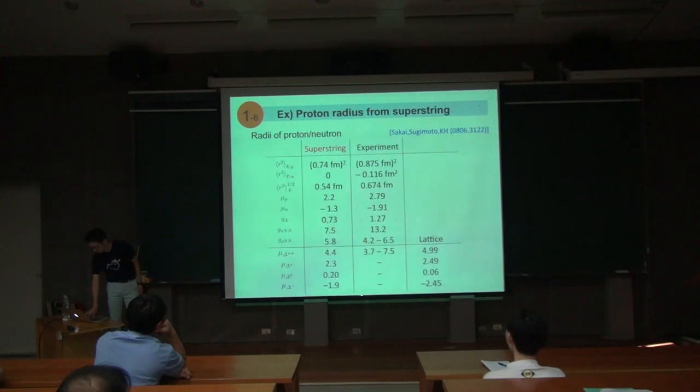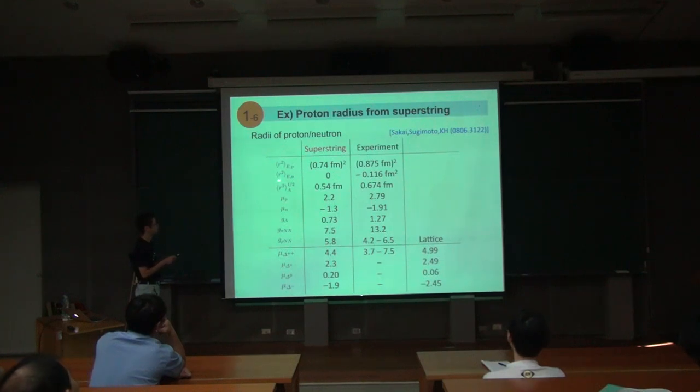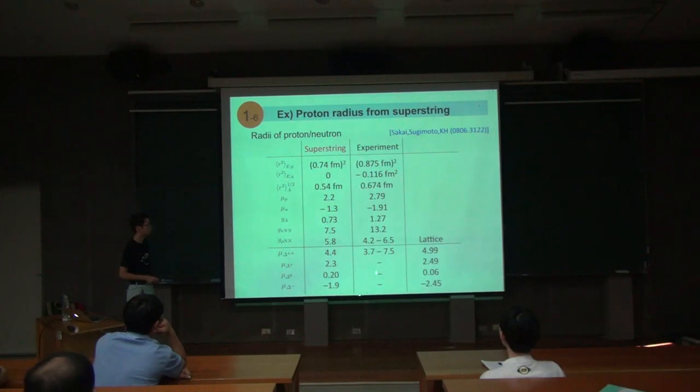There are other things. Like here, this is a proton radius computed from super-symmetric theory. This is the proton radius. This is a neutron radius, charge radius. And also for delta excitation or many other excitations you can compute many things from just two parameters and this is the result and this is the experiment and it has a nice agreement. And as for this there is no experiment so we can compare that with the lattice QCD and it has a nice agreement.